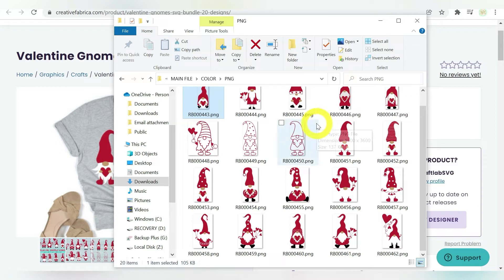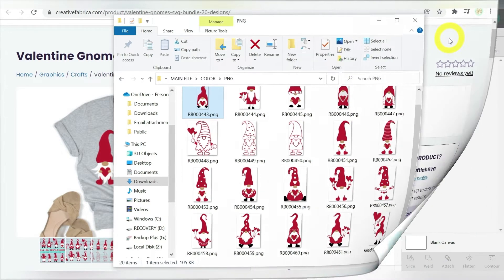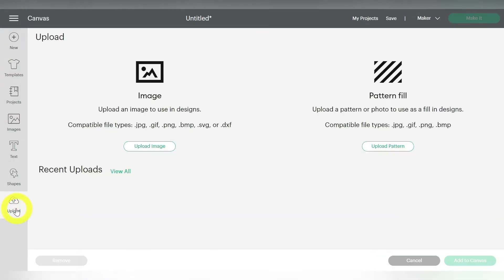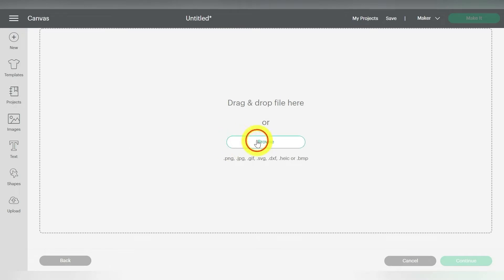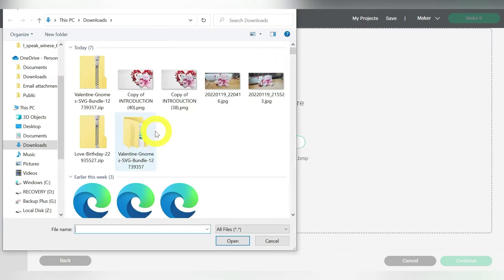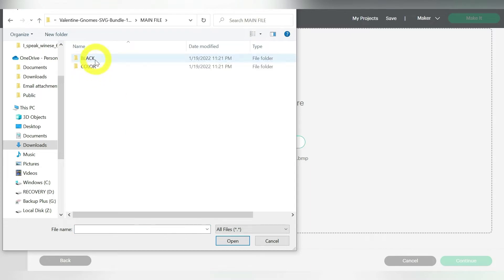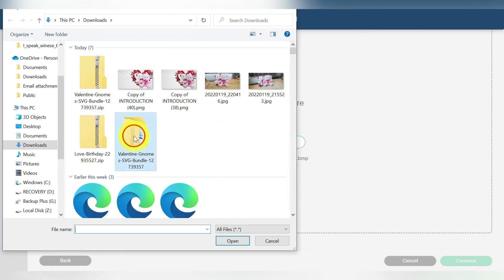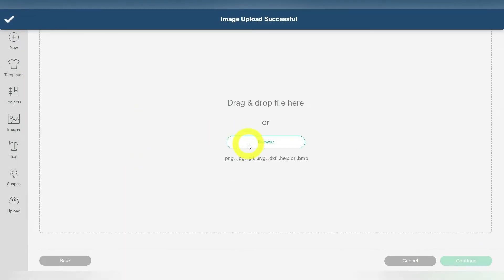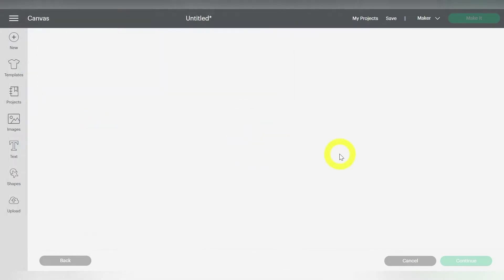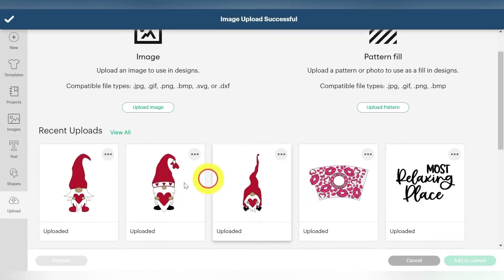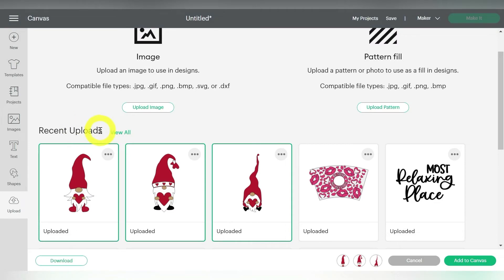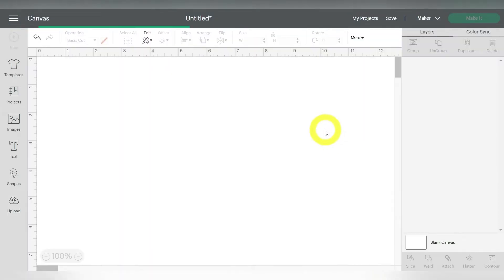So what I can do is just go ahead and open up Cricut Design Space. And from my canvas here, I'm just going to go to Upload, Upload Image, and Browse. I'm going to go back into that same SVG. And do you guys remember which numbers you wanted? If not, you can click back over and check out the previews again.